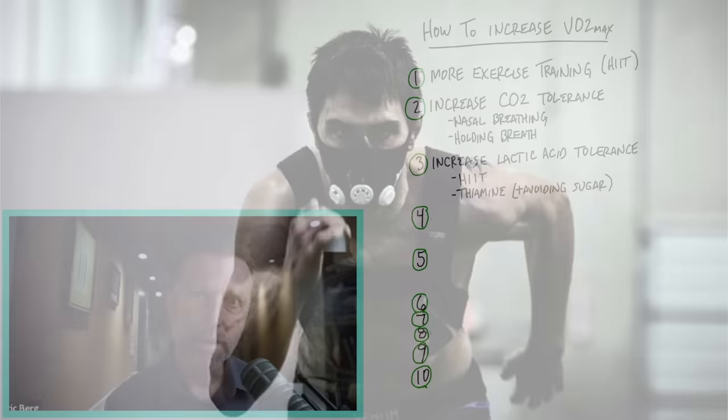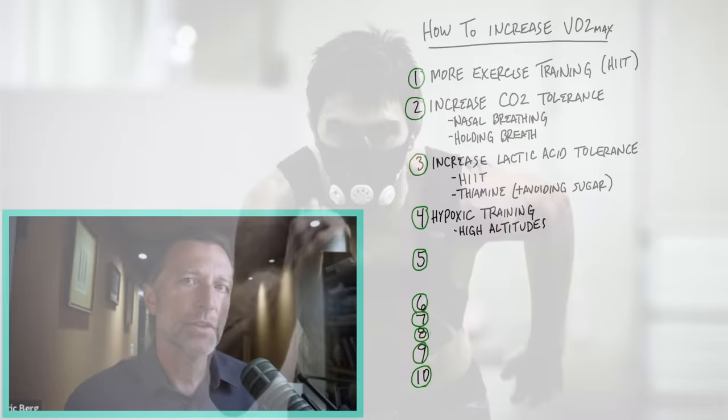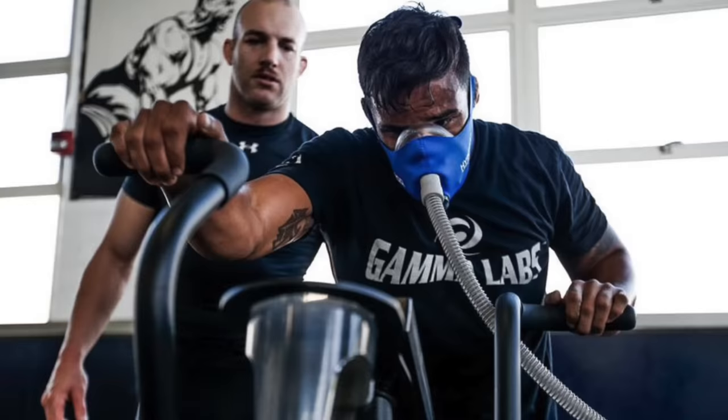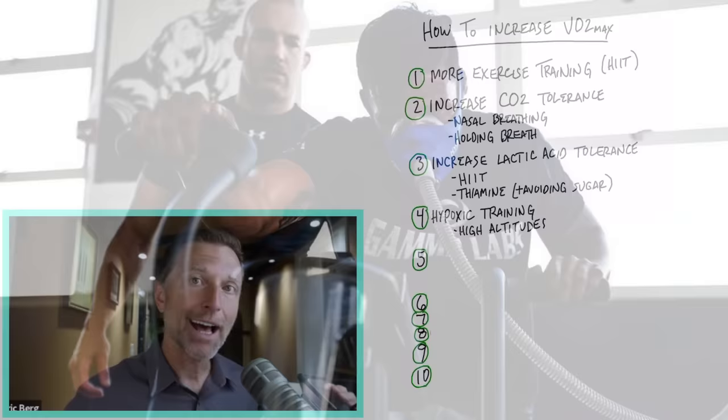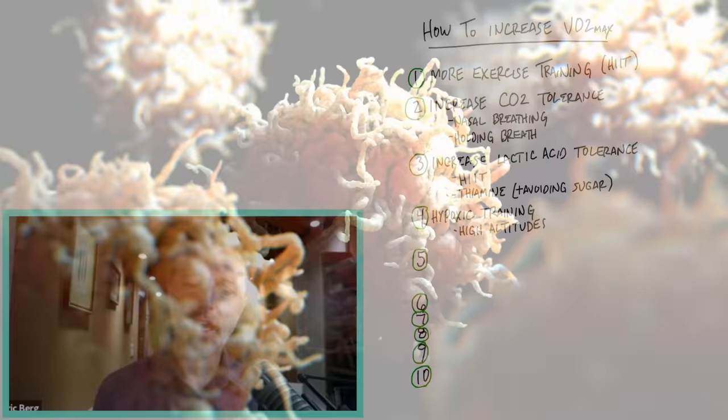And number four, hypoxic training. And this is also kind of a version of what I just mentioned with the CO2 tolerance or improving that. But hypoxic training, you can do that through restricting air, breathing while you're exercising, or exercising at higher altitudes. Athletes that do that generate much greater capacity for holding oxygen, and their white blood cells are much larger.